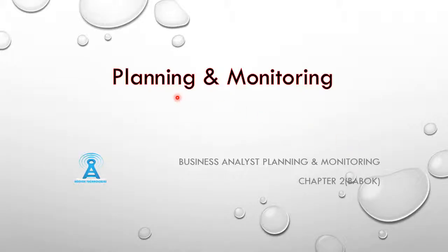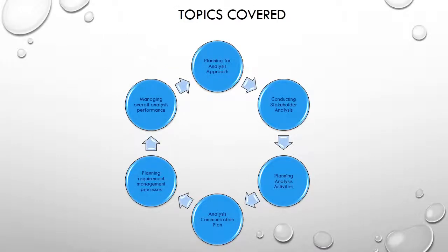Hello and welcome everyone. Today we are going to talk about some highlights of planning and monitoring. This is one of the key chapters according to the Business Analyst Body of Knowledge. Throughout this training we talk about how to plan — what is the proper way to plan from the business analyst perspective — and what are the different processes we must follow: planning for analysis approach, conducting stakeholder analysis, planning analysis activities, communication plan, requirement management process, and managing overall performance.